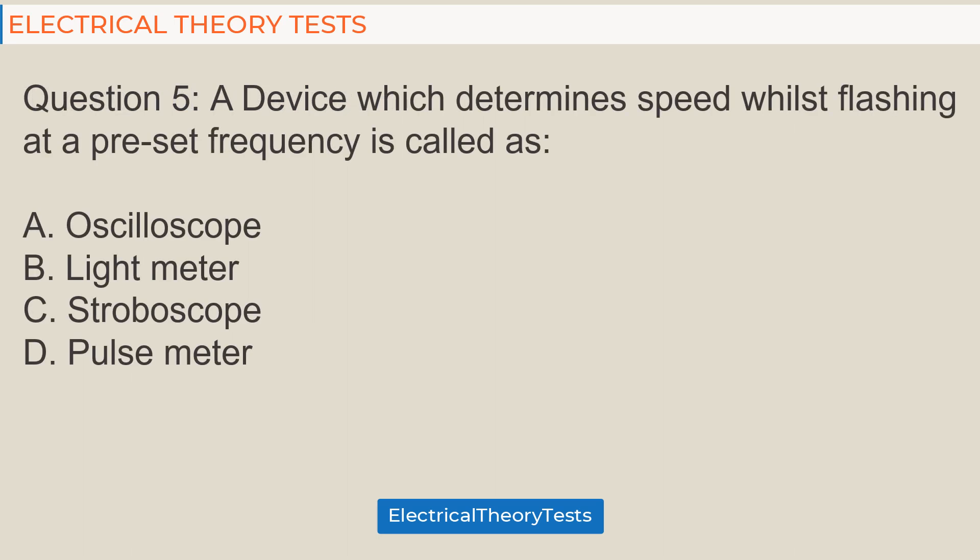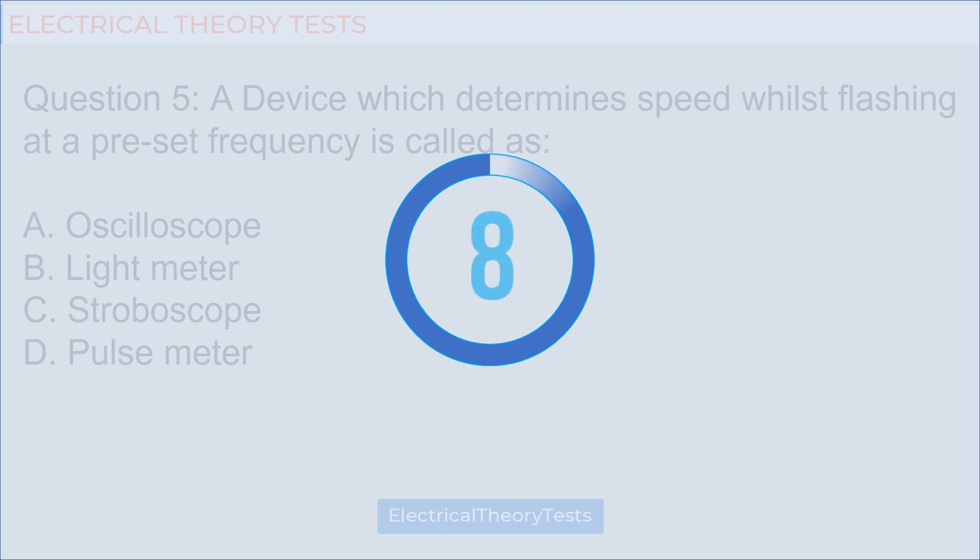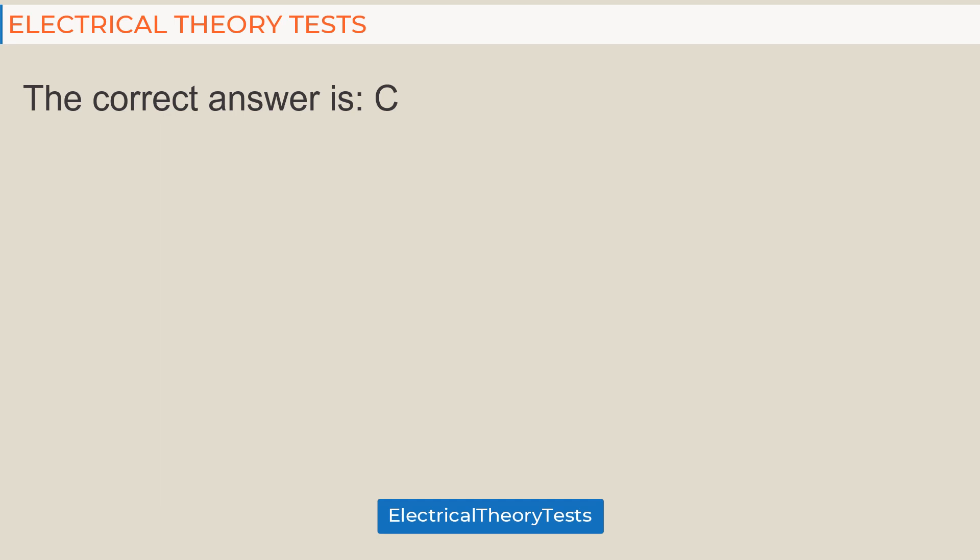Question 5: A device which determines speed whilst flashing at a preset frequency is called as: A. oscilloscope, B. light meter, C. stroboscope, D. pulse meter. The correct answer is C.